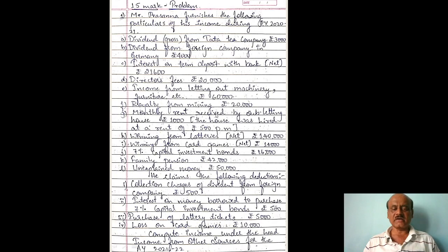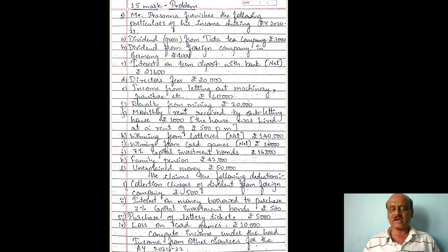Monthly rent received by subletting house: Rs. 1,000. The house was hired at a rent of Rs. 500 per month. Winnings from lotteries, net: Rs. 1,40,000. Winnings from card games, net: Rs. 1,400.